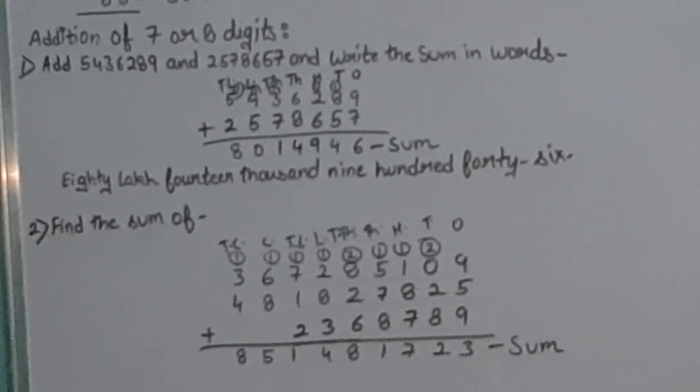After that we will get 851481723. This is the sum or the answer that we get after adding these three numbers. If we have to write this number in words, how do we write it?